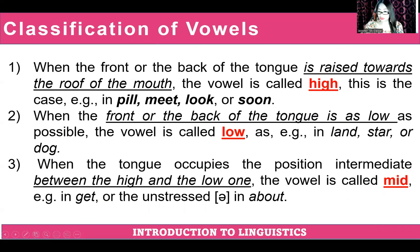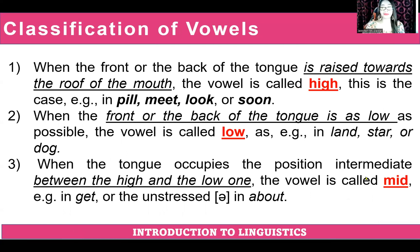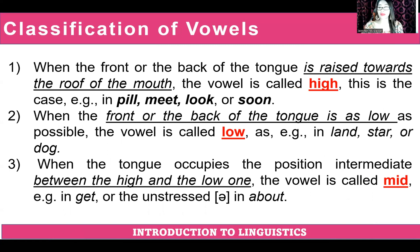To help us understand more, here's an example. When the front or back of the tongue is raised towards the roof of the mouth, the vowel is called high. This is the case of words like peel, meat, flick, or sue.